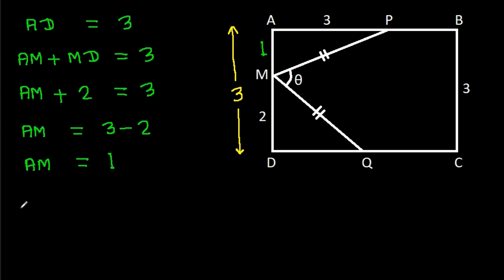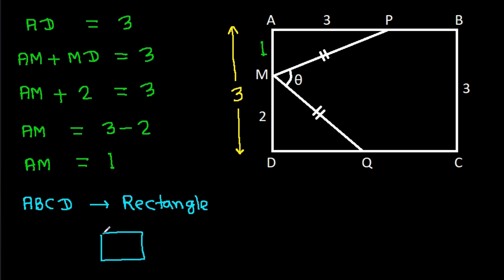We know that ABCD is a rectangle, and in any rectangle, all four angles are 90 degrees. So these angles will be 90 degrees.